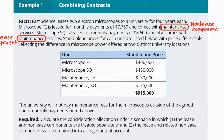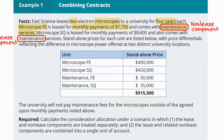Example number one: Fast Science leases two electron microscopes to a university for four years each. Microscope FE is leased for monthly payments of $7,750 and comes with maintenance services — that's a non-lease component. Microscope SQ is leased for monthly payments of $8,600 and also comes with maintenance services.